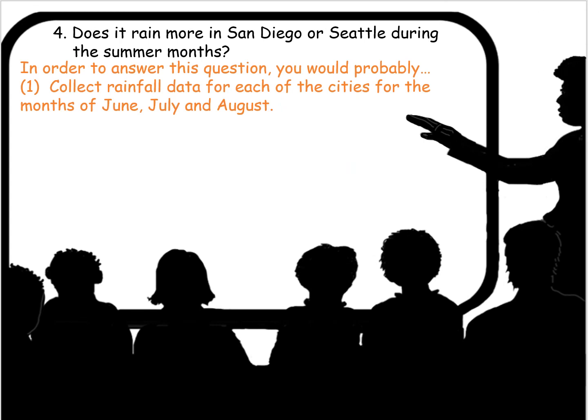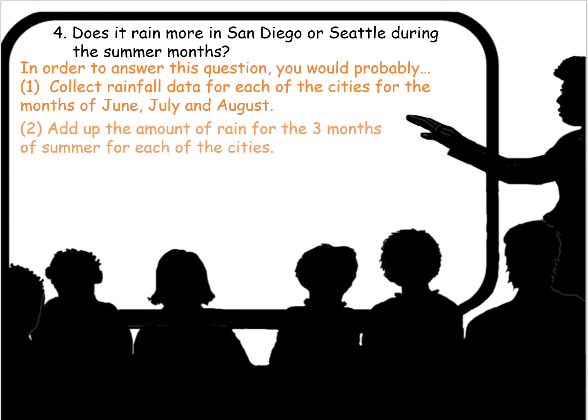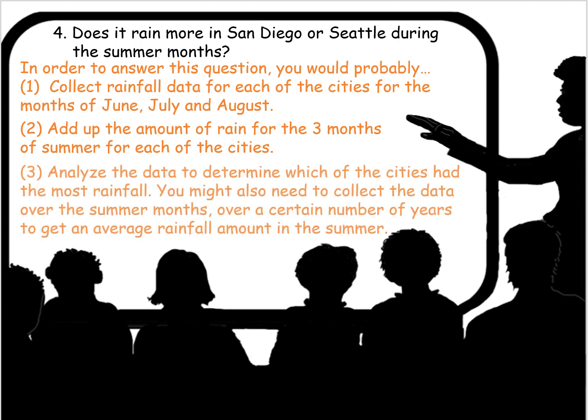Does it rain more in San Diego or Seattle during the summer months? In order to answer this question, you would collect rainfall data for each city for the months of June, July, and August. You would add up the amount of rain for the three summer months for each city and analyze the data to determine which had the most rainfall. You might also need to collect data over several years to get an average summer rainfall amount. Again, this is a statistical question.